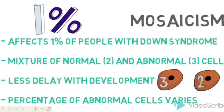Mosaicism is very rare, and it affects about 1% of Down's Syndrome patients. It happens when the cells in the body have a different number of chromosome 21 — either 2 or 3. The percentage of cells with 47 chromosomes varies from person to person.